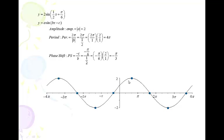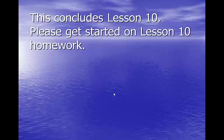Moving in quarter period increments from that anchor point — which is pi in this case — I place each successive point a third of an interval offset. If you can get that first anchor point and move to the right in quarter period increments, you'll be in great shape. That concludes Lesson 10 — please get started on Lesson 10 homework.